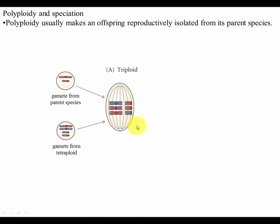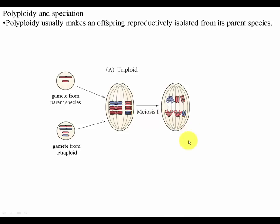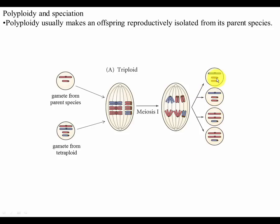That produces a zygote that is a triploid. While that might grow up and be perfectly viable, its reproductive fitness is going to be horrid. The reason is that after meiosis one, you end up with gametes that have unbalanced numbers of chromosomes. If this gamete goes ahead and gets fertilized, it's going to have only one dose of the big chromosome and two doses of the little chromosome. Some others will have two doses of the big chromosome and one dose of the little chromosome, so you're going to have unbalanced effects.